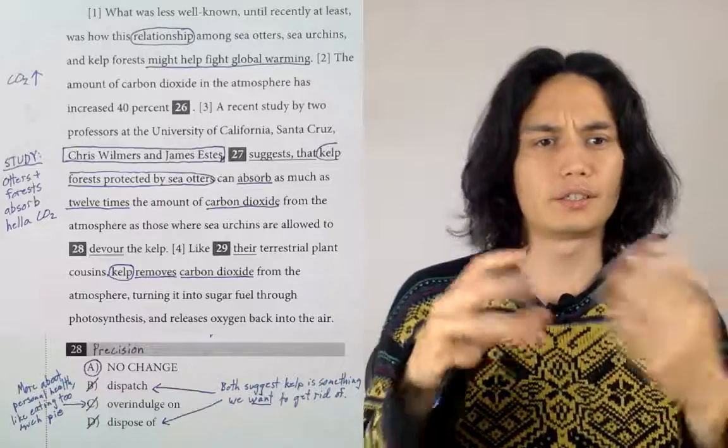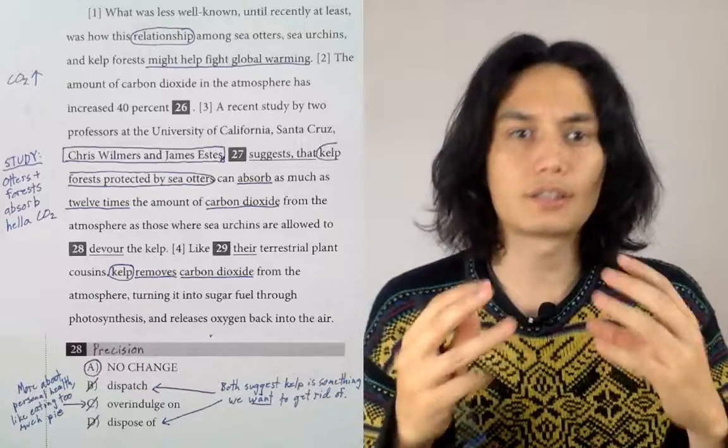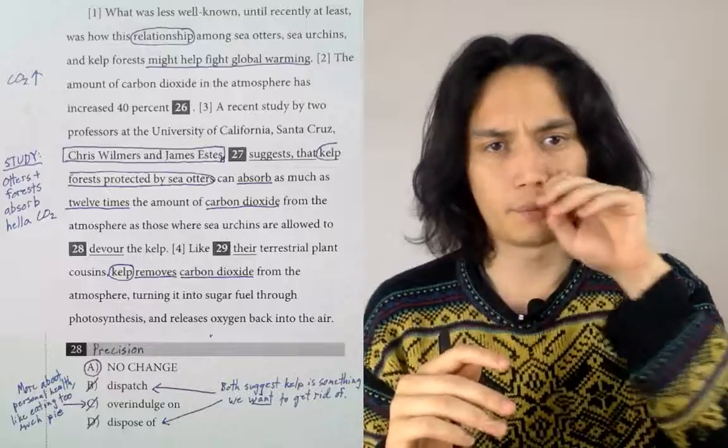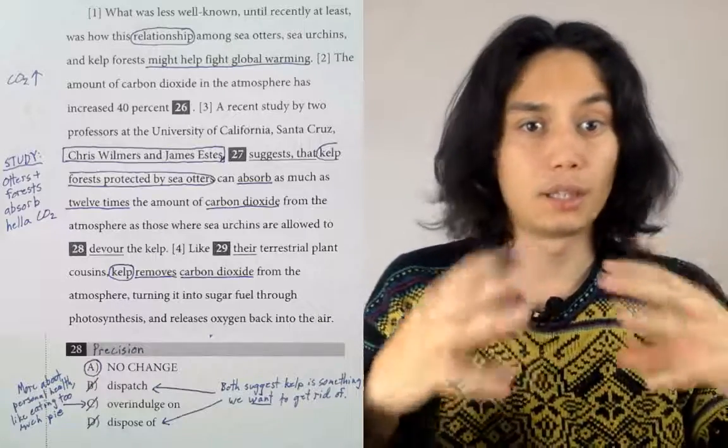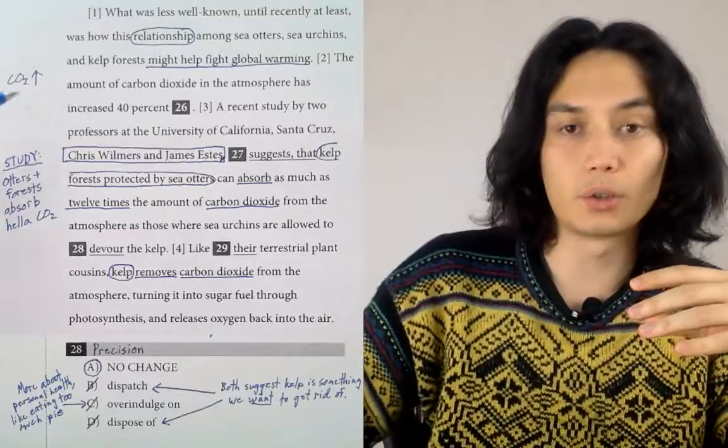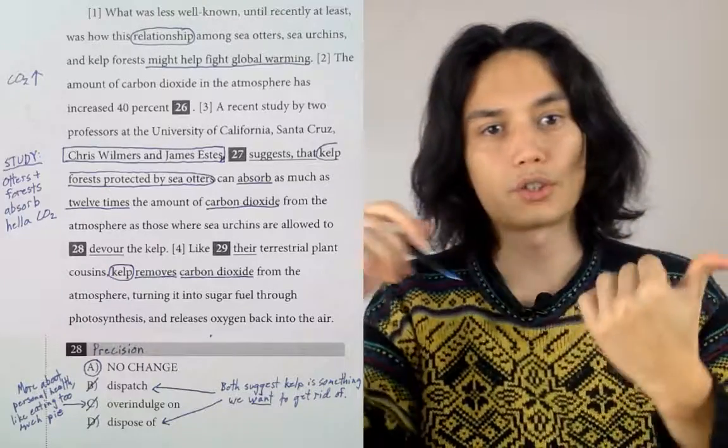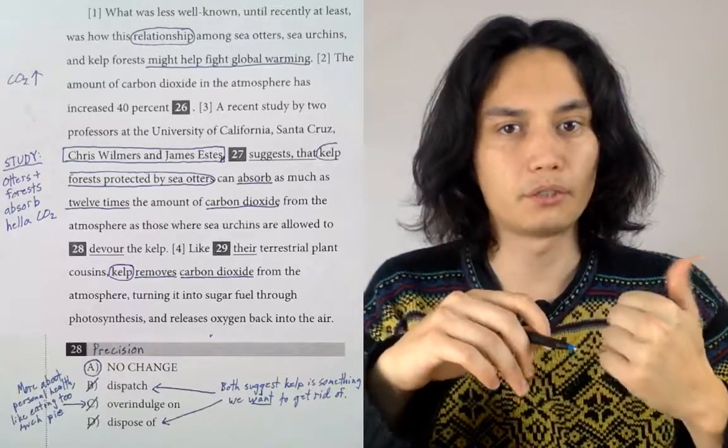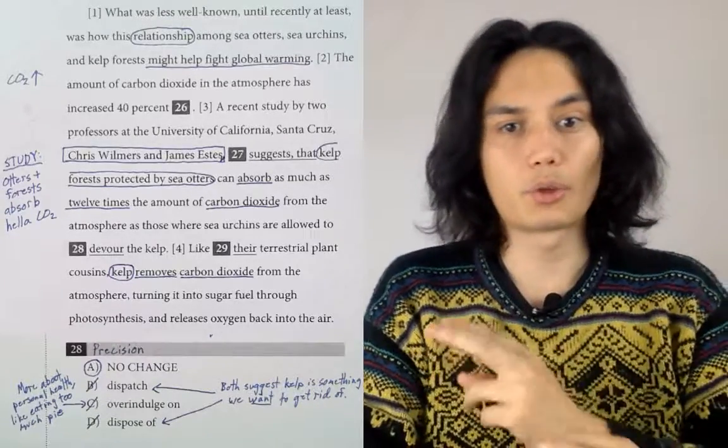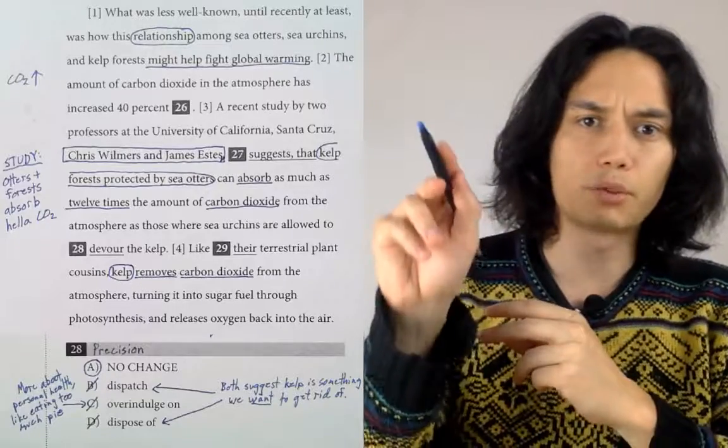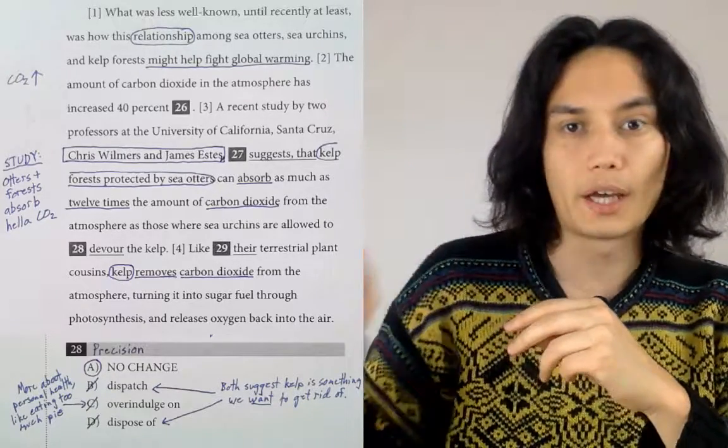This question comes in the middle of a big long paragraph, the second one in the passage, the one describing the links between global warming and otters and kelp. The otters protect the kelp, the kelp absorbs the CO2, CO2 causes global warming.